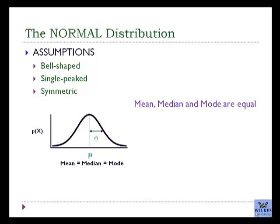The normal distribution has a few assumptions. It's bell-shaped, it's single-peaked, and symmetric. The mean, the median, and the mode are equal.